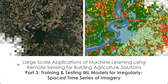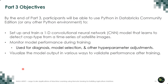This is the third part of our series on large-scale applications of machine learning using remote sensing. Our objectives in this part are that participants will be able to use Python and Databricks Community, or really any other Python environment, to set up and train a 1D convolutional neural network. That model is intended to learn to detect crop type from a time series of imagery built on the previous two sessions. We're also going to learn how to monitor the model training process, which is important for diagnosis, model selection, and hyperparameter adjustments. Finally, we'll visualize the model output in various ways to validate performance.